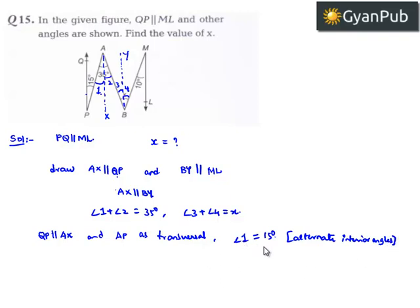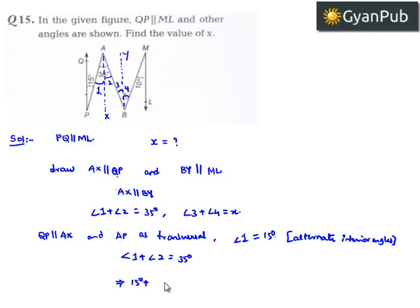We got angle 1 is equal to 15 degrees. Substituting in the equation angle 1 plus angle 2 equals 35 degrees, we get 15 degrees plus angle 2 equals 35 degrees, which implies angle 2 is equal to 35 minus 15, that is 20 degrees.